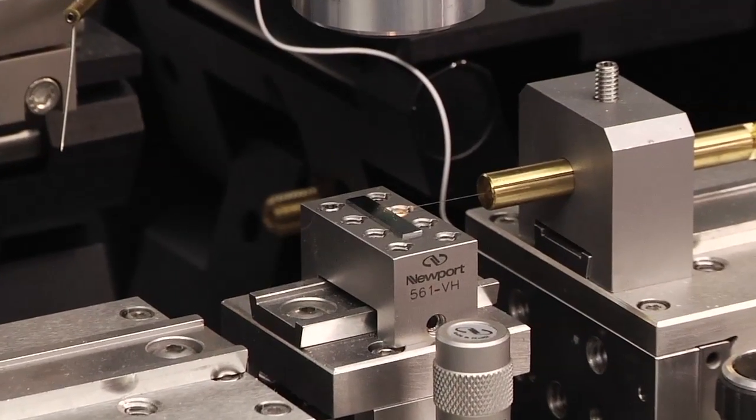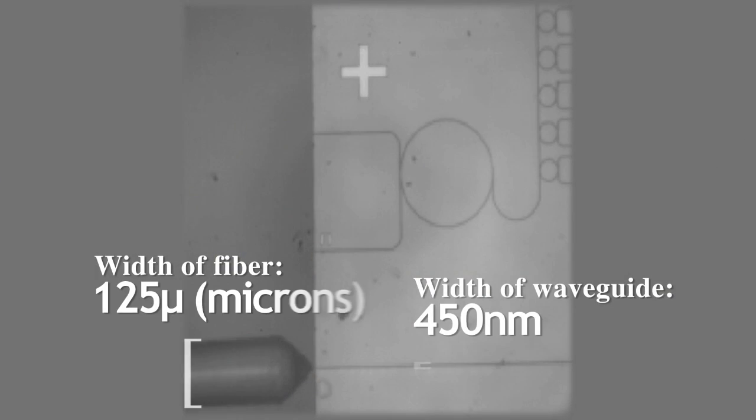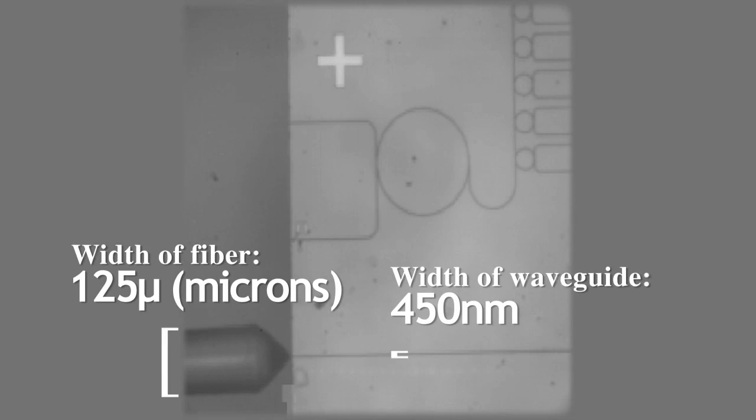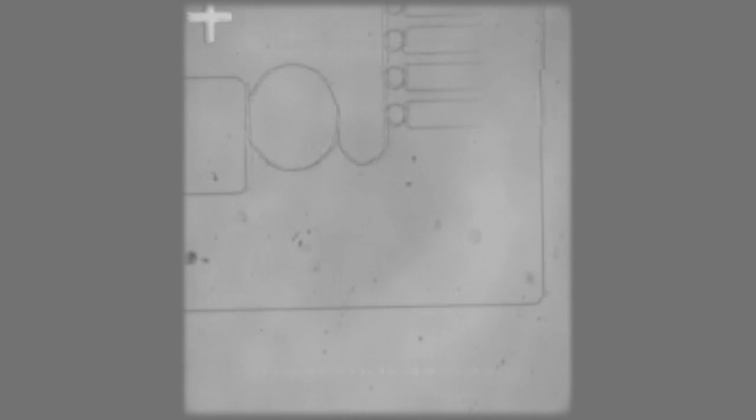There's a couple different devices that are important to optics. The main thing is a wire for light. That's typically known as a waveguide and it's really exactly equivalent to a metal wire used for electrons, but instead of moving electrons it moves light.